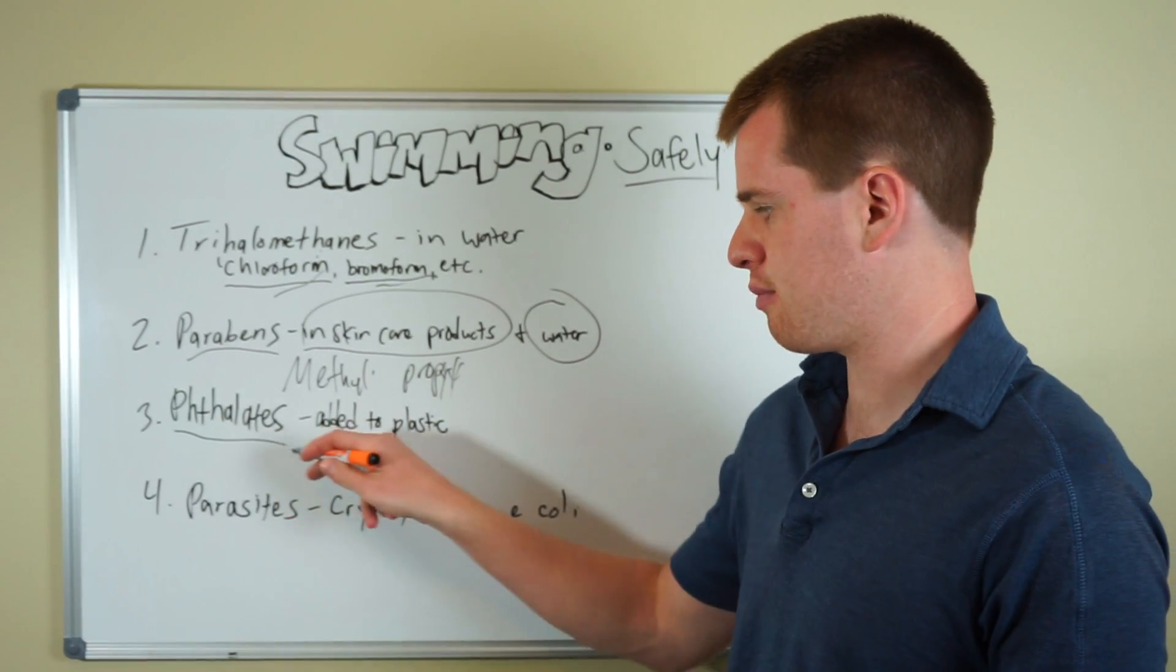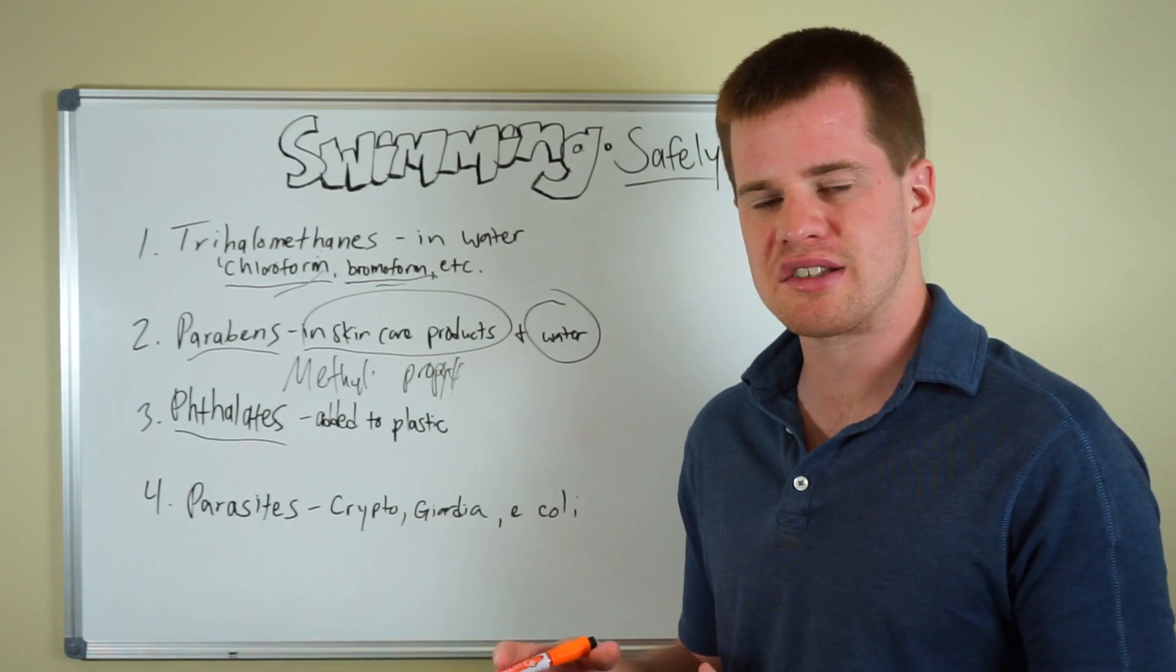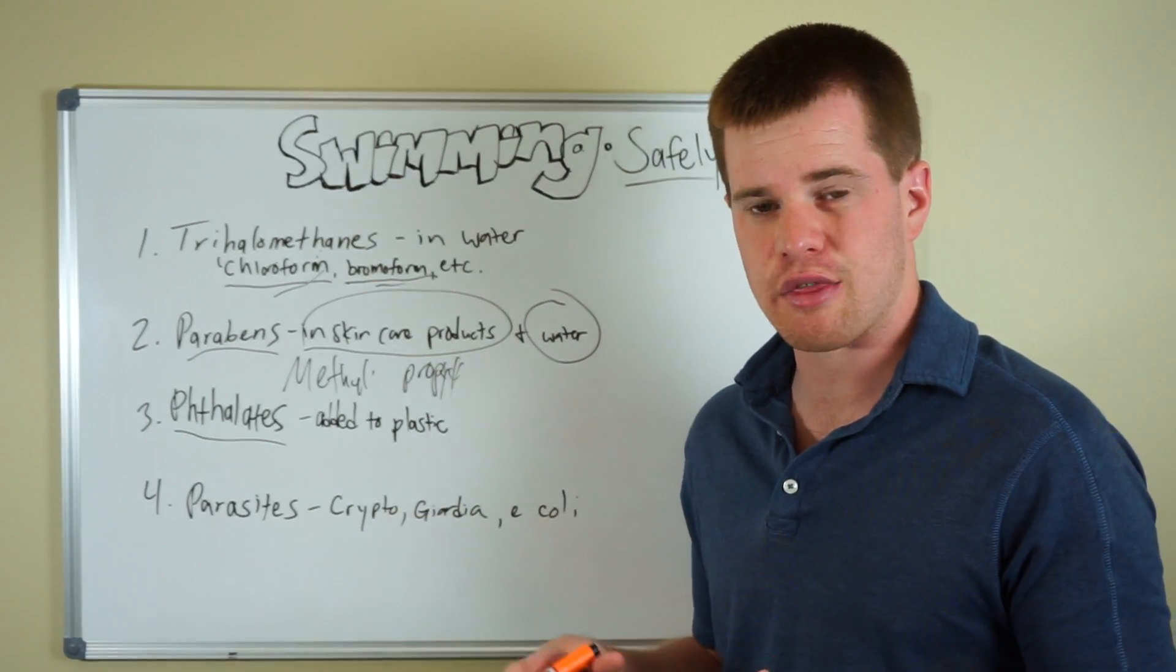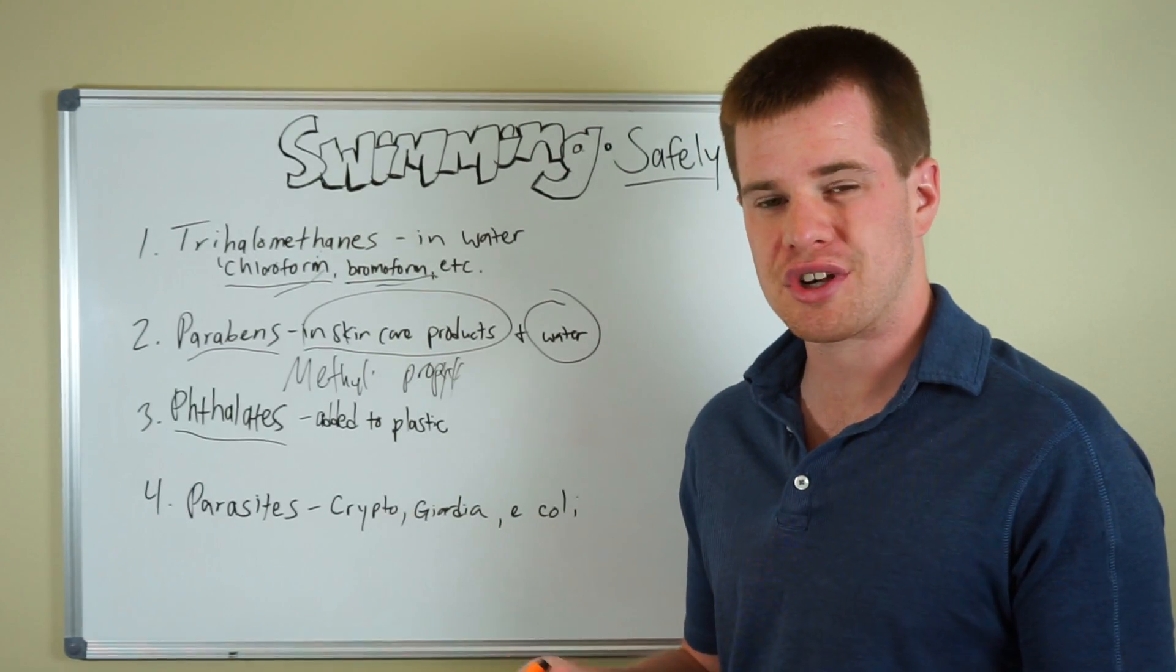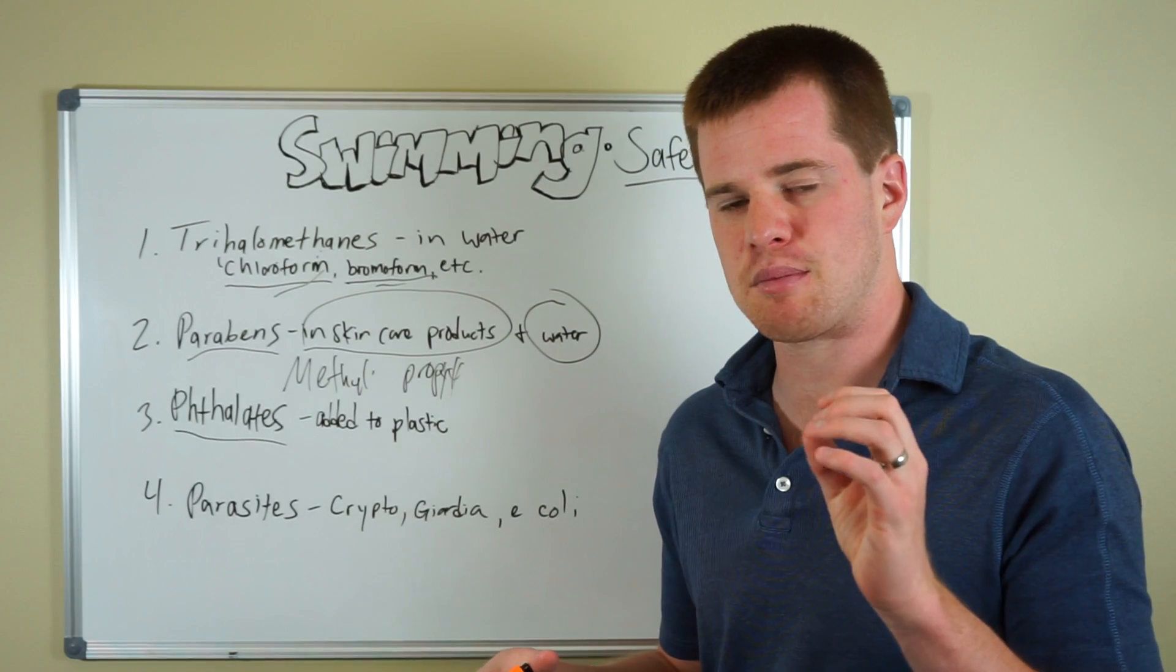So phthalates, this is a big one here. Phthalates are what are added to plastic to soften the plastic. So you're not typically going to see phthalates on the label, but you're going to know that they're in there if you're using anything that has like a soft plastic material to it.